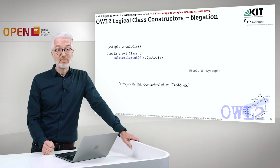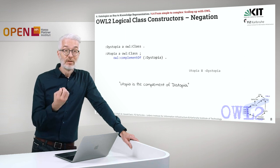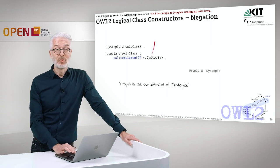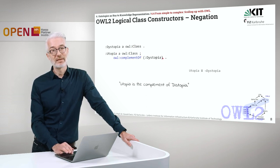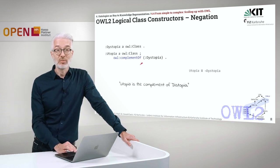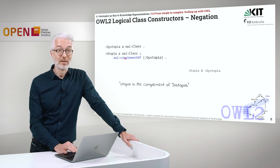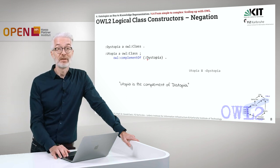Next we define negation. Utopia is the complement of dystopia. We define a class Dystopia, then define a class Utopia and say OWL complementOf with a collection containing Dystopia. This means utopia is the complement of dystopia. Not difficult either.